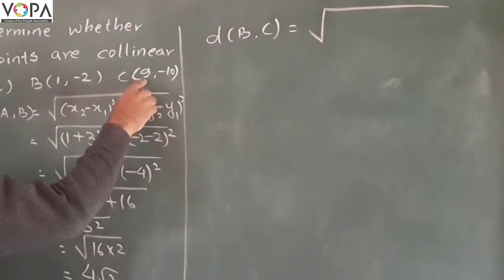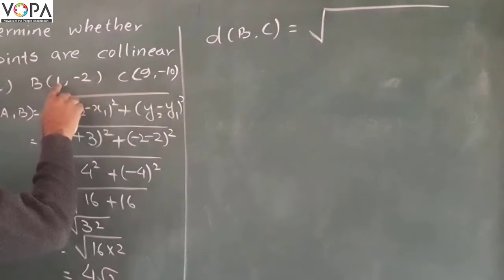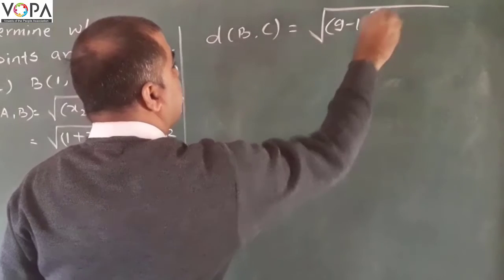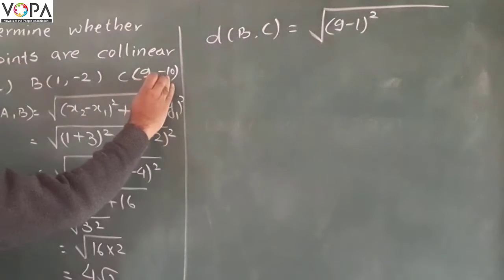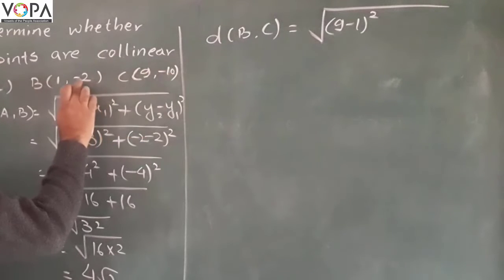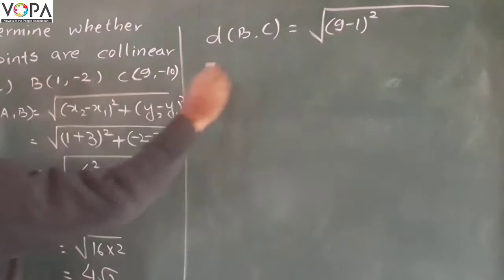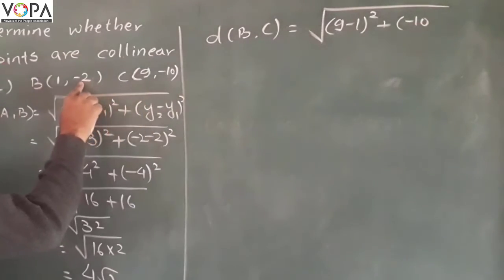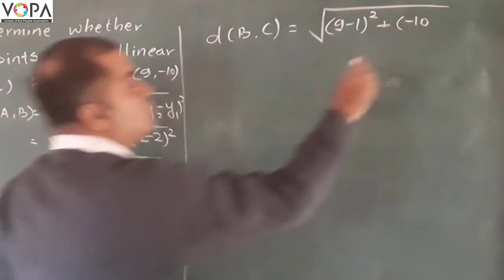Here consider x2 is 9 and x1 is 1: (9 minus 1) squared. Similarly, y2 is negative 10 and y1 is minus 2. First write minus 10, and now minus of the formula, minus of 2, that will be plus 2.